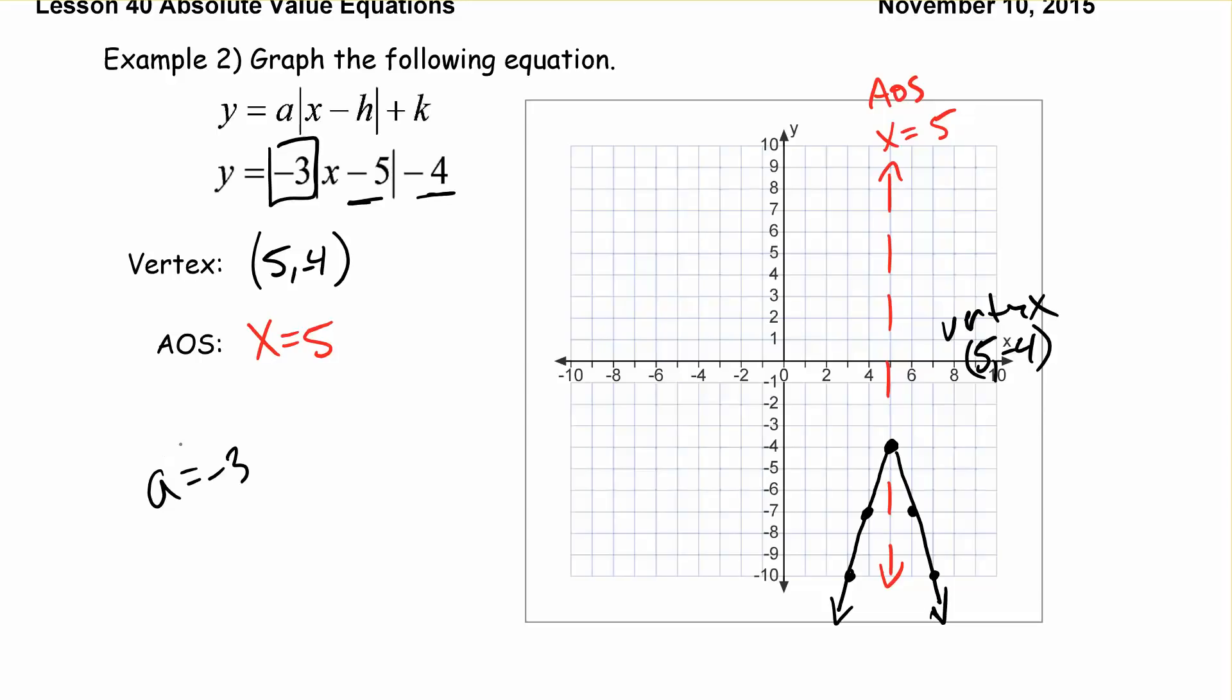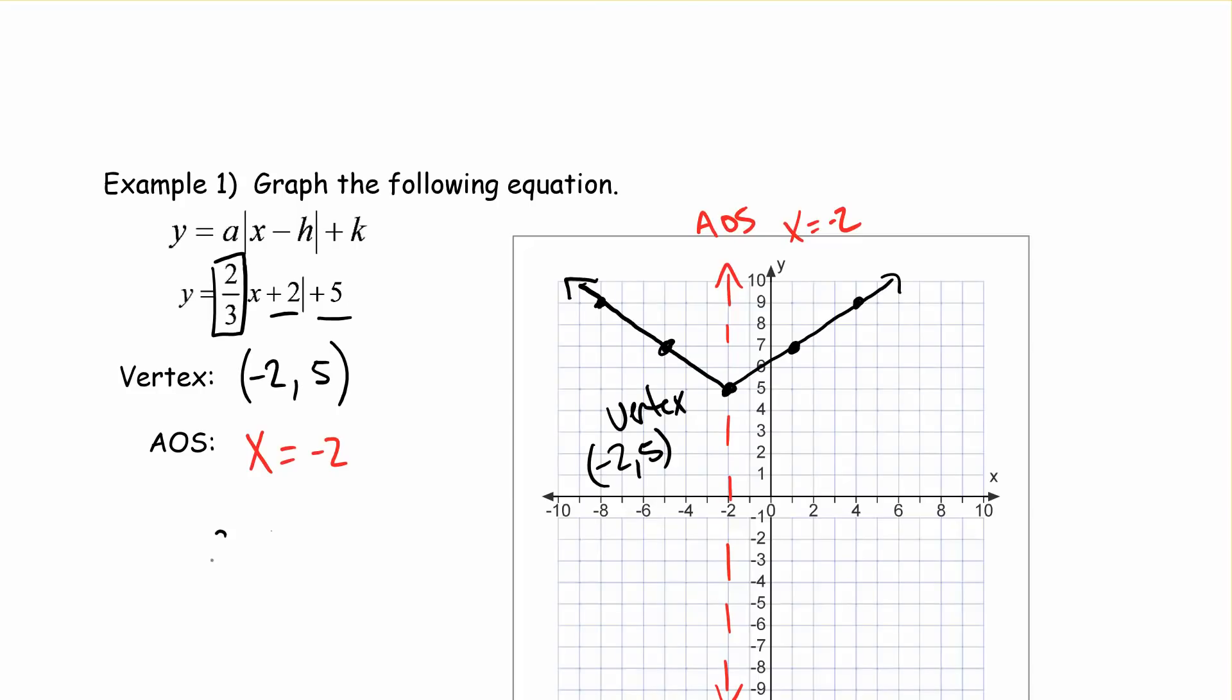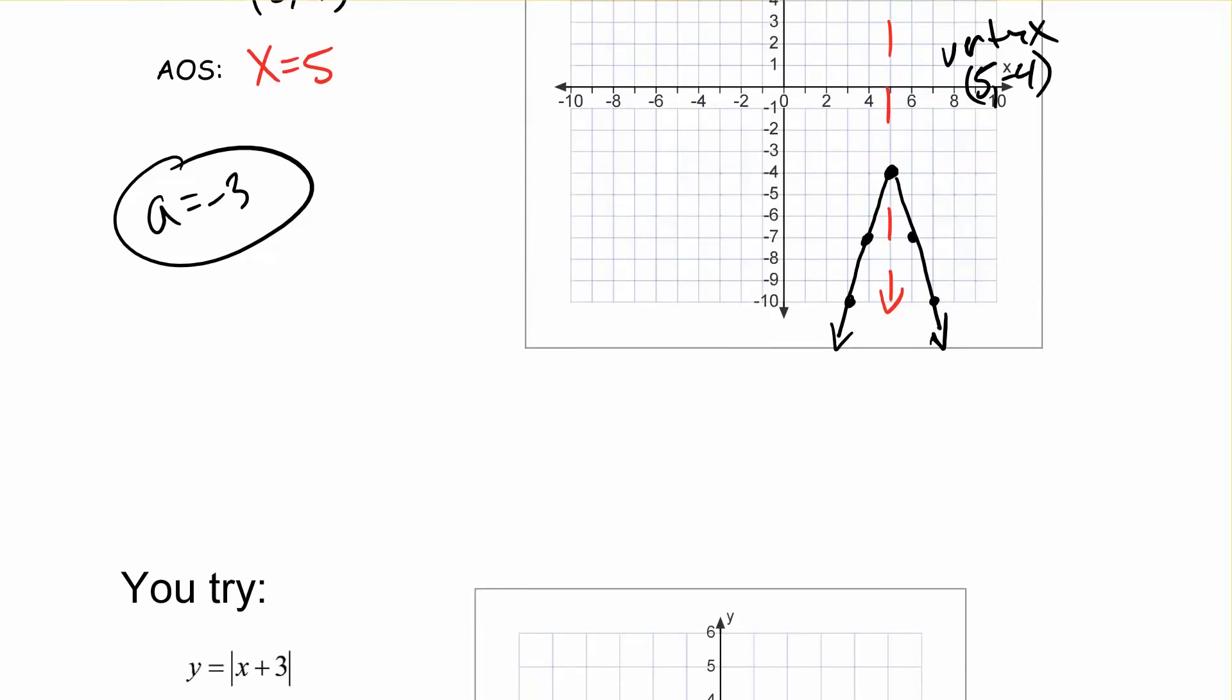And notice how our A value here was negative and we said that it'd v'd down before our A value was positive and it v'd up. See how our A here was positive 2 thirds so it v'd up. And now our A is negative 3 so we v'd down. We go down 3 over 1.